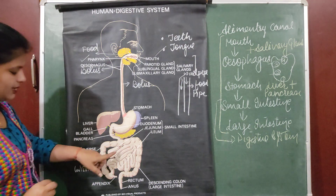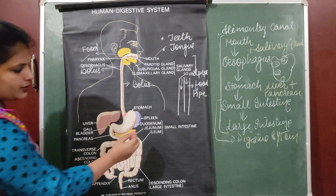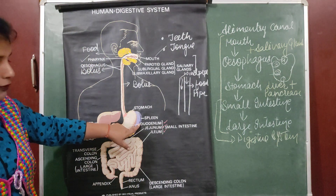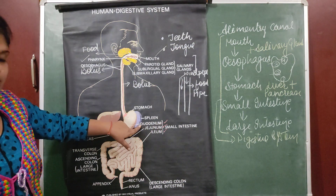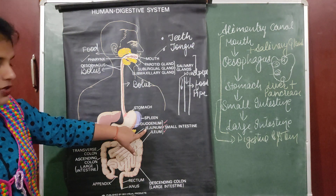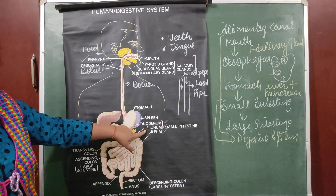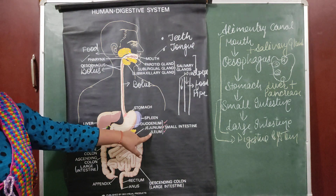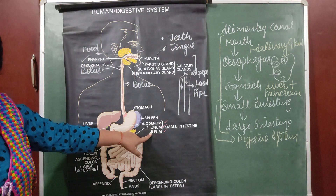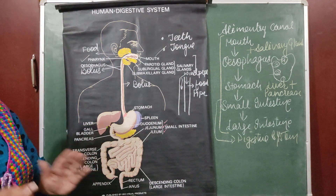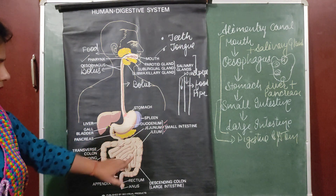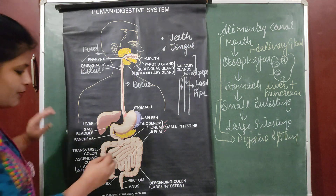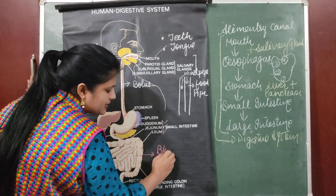From the stomach, digested food enters into the small intestine. The small intestine is divided into three parts: duodenum, jejunum, and ileum. 'D' for duodenum and 'D' for digestion — this is where digestion takes place. Jejunum is where food is stored with no digestion at all. The third part is the ileum, where absorption of digested food takes place. Digested food from the small intestine is absorbed into the blood.